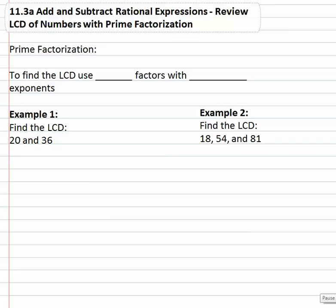In this video we're going to review how we can find the least common multiple or least common denominator of several numbers using prime factorization, or a product of primes. When we want to find the least common denominator or least common multiple using this product of primes, we will use all factors with the highest exponent.